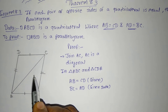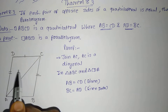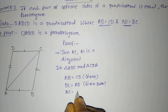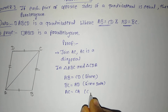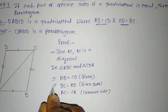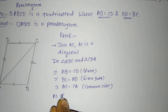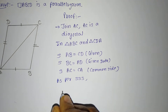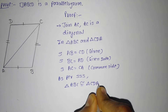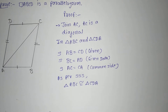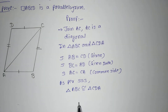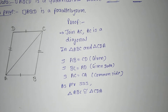Here we have side, side, side. So by the SSS rule, we can say that triangle ABC is congruent to triangle CDA for the correspondence ABC ↔ CDA. Since these two triangles are congruent, their corresponding parts are also congruent — we apply CPCT (congruent parts of congruent triangles).